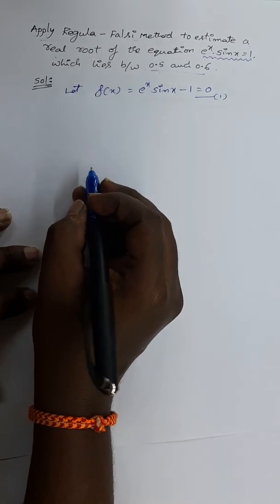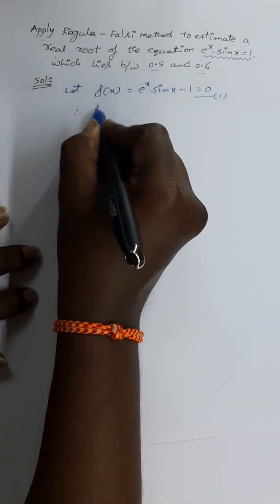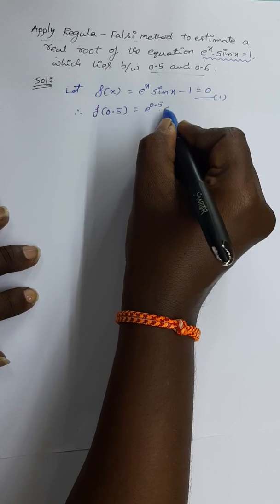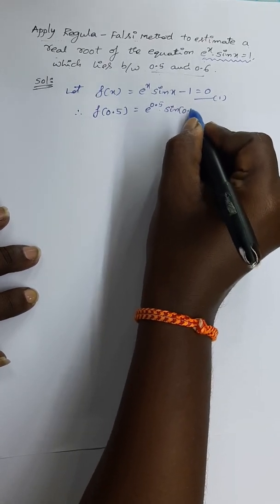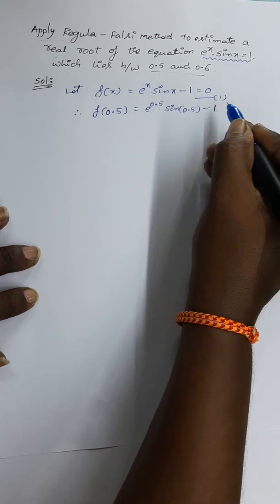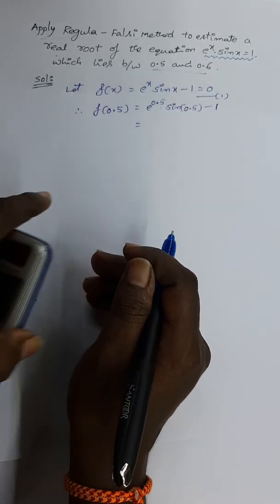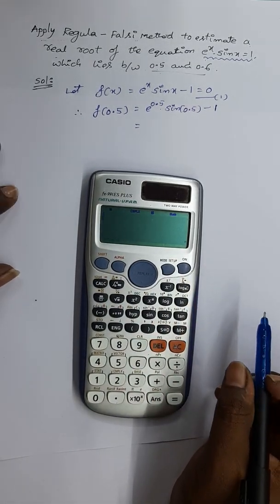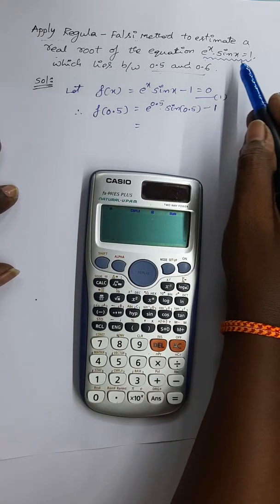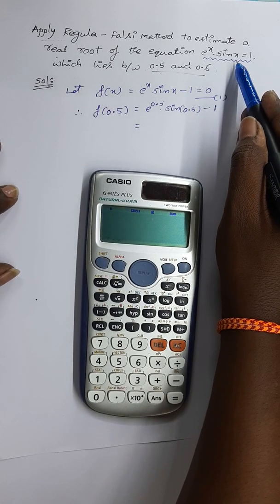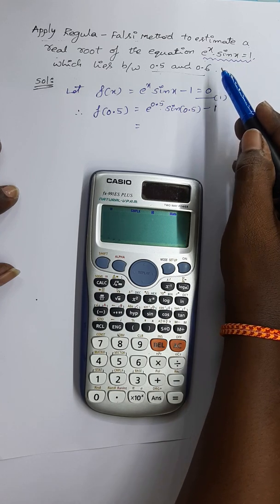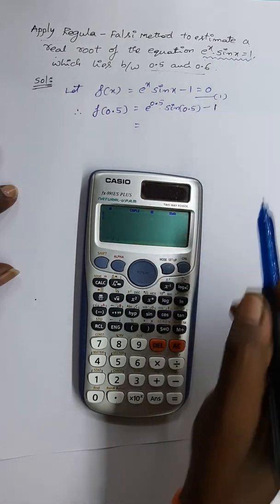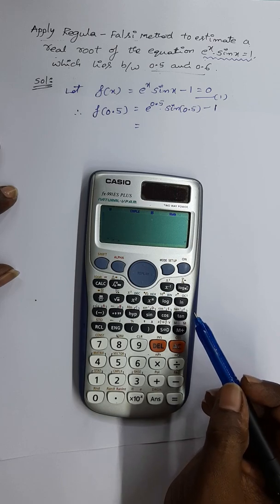First we should find out the value of f(0.5), which is e^0.5 · sin(0.5) − 1. By using a scientific calculator, we can find out this function value. Whenever trigonometric terms are involved, then that equation is known as a transcendental equation. Whenever sin, cos, or other trigonometric functions are involved, we should keep our scientific calculator in radians mode first.